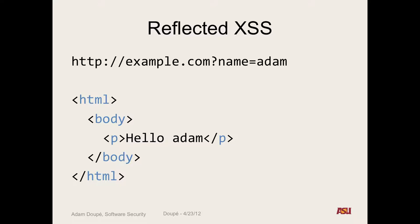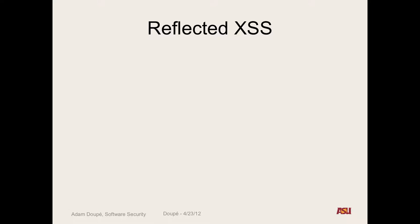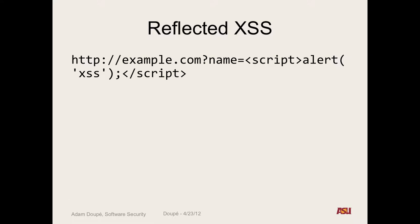This is where the problem comes in. If we look at this in our browser, we'd see 'hello Adam'. But what happens if we put HTML — or what would be parsed as HTML — into that parameter? Specifically, we care about bypassing the same-origin policy. What if we put some JavaScript code in there: a starting script tag, an alert 'cross-site scripting', and an ending script tag?